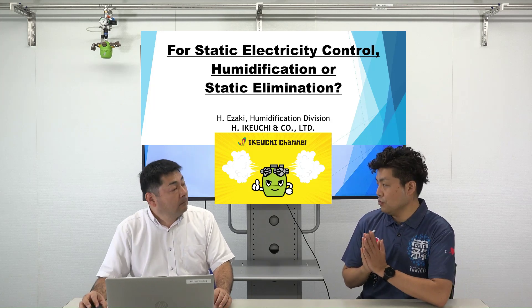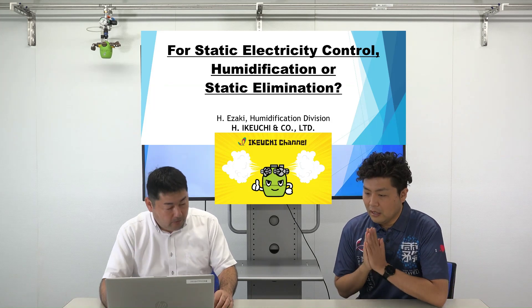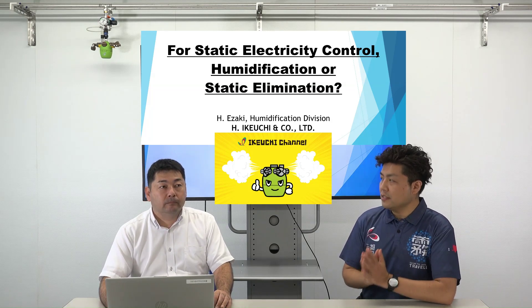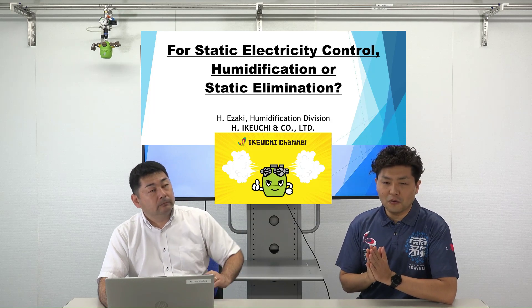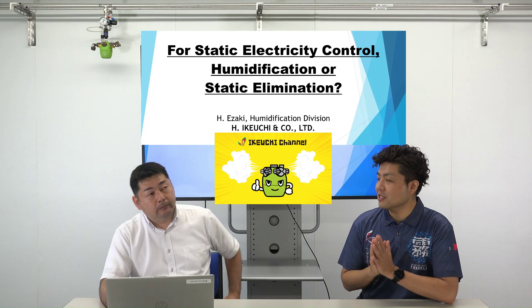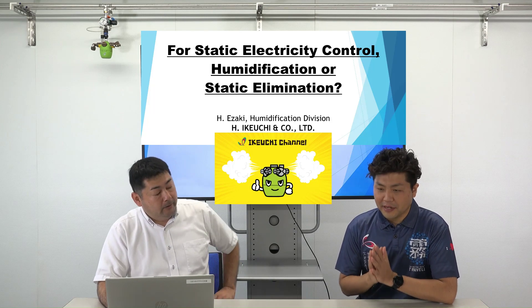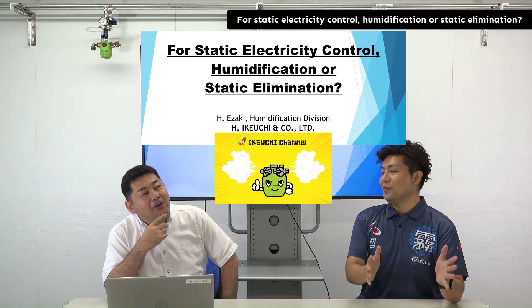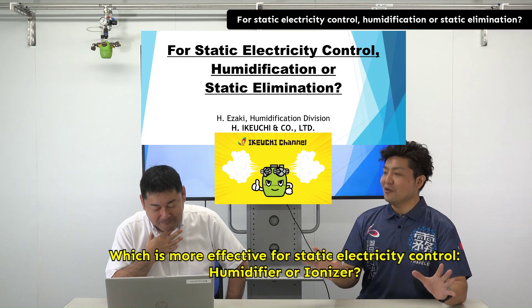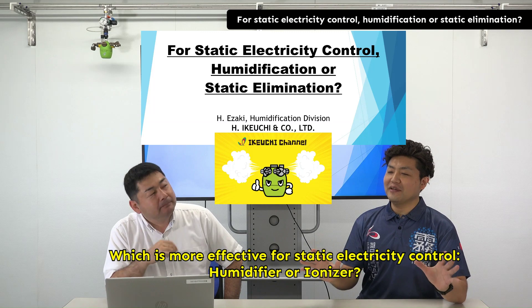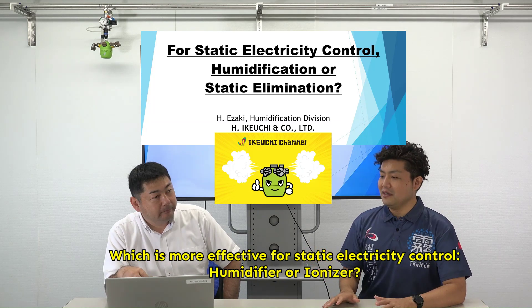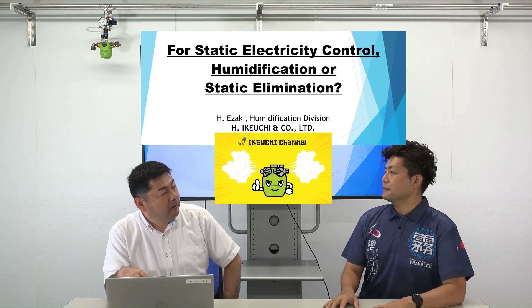I have one question. I know this might be a tough question, but I really want to ask you. There seem to be two ways to deal with static: first is preventing static electricity through humidity control and humidification, and then there's using ionizers to get rid of static electricity. It looks like these are two options against static, and I've always wondered which one works better. I've done a bunch of reading about ionizers, but I'm still not sure which is more effective. I'm hoping you can help me figure this out today.